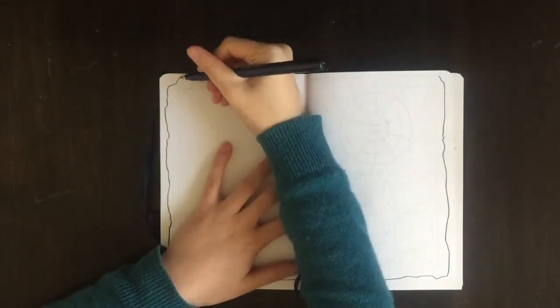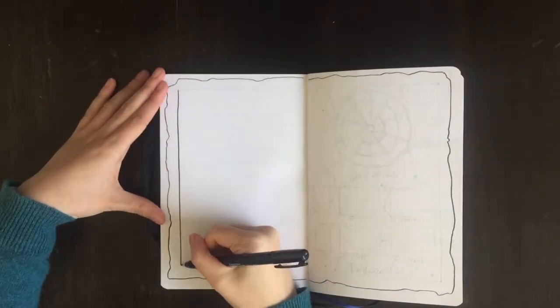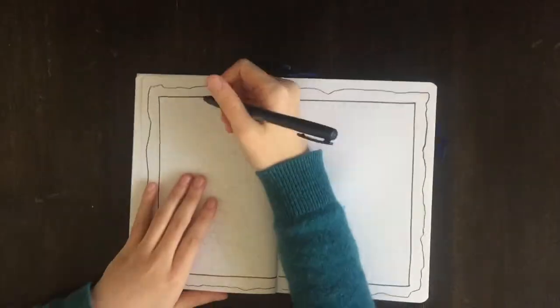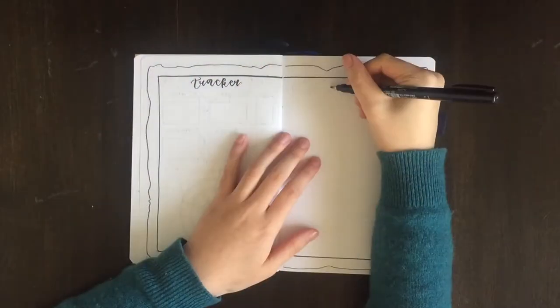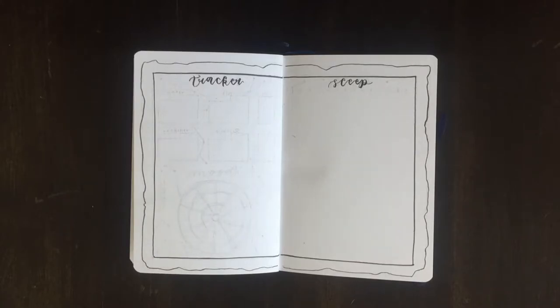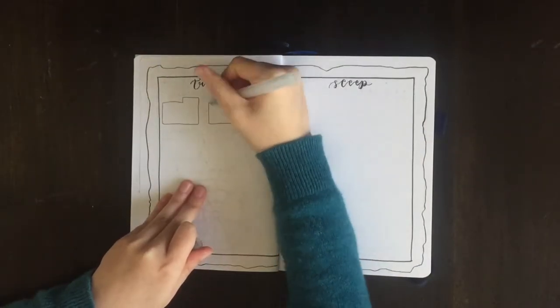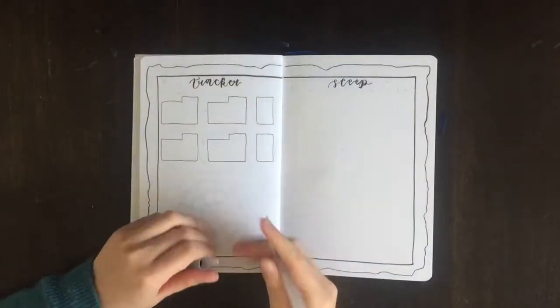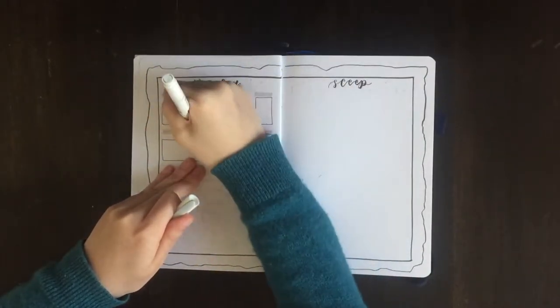On the next page, this is my trackers for my mood, my habit, and my sleep. I decided to make this a two-page spread that is in the shape of an old map. The edges of the page are kind of worn, as you would see when you're looking at old documents.